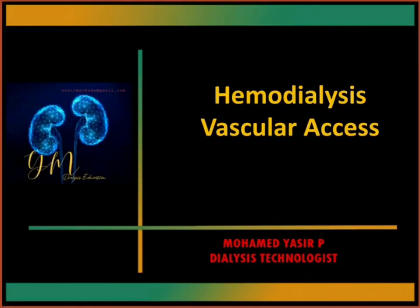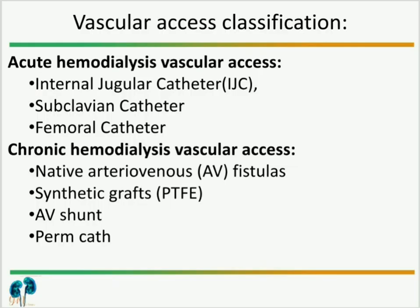Today we are going to discuss hemodialysis vascular access. Hemodialysis access or vascular access is a way to reach the blood for hemodialysis. The access allows blood to travel through the dialyzer for clearance. Vascular access can be classified into two types: acute hemodialysis vascular access and chronic hemodialysis vascular access.